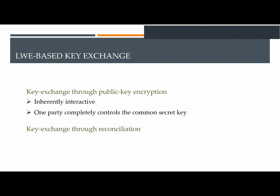In the first case, Alice samples a public key and sends it to Bob. Then Bob picks the common secret key and sends the encryption to Alice under her public key. Then the common key is the key that Alice can get by decrypting Bob's message.